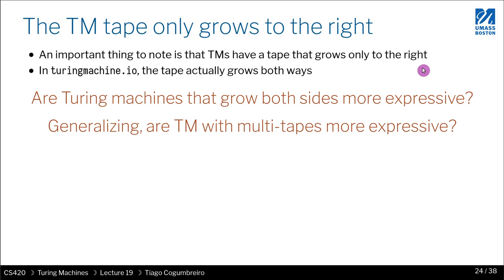And when the tape's head tries to move past the beginning, it would just sit still, right? It shouldn't advance to the left. However, in the website Turing machine.io, the tape can grow both sides.